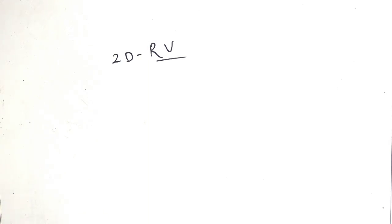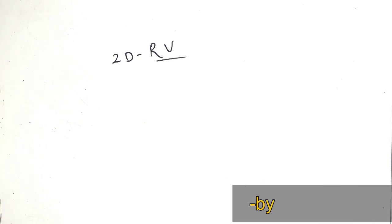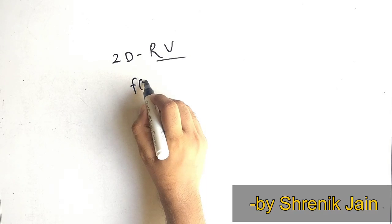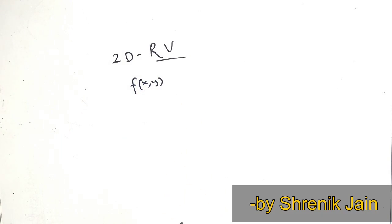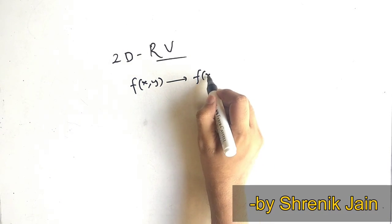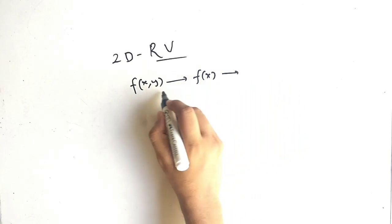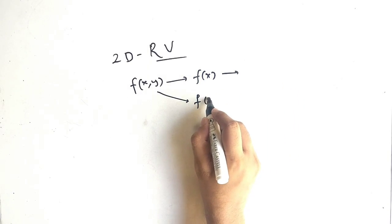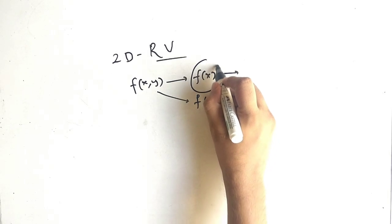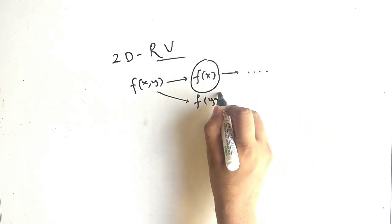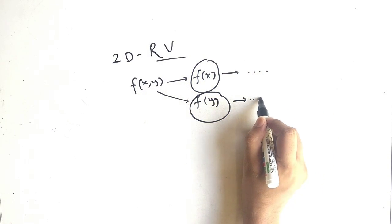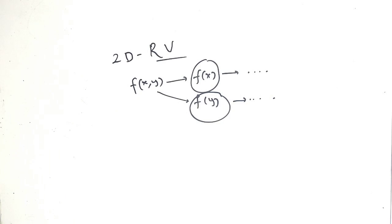Today our topic is two-dimensional random variables. So basically, capital F means the two-dimensional random variable. From this we have to find small f of x, and from that we also have to find small f of y. Let's see what steps are to be followed for each.